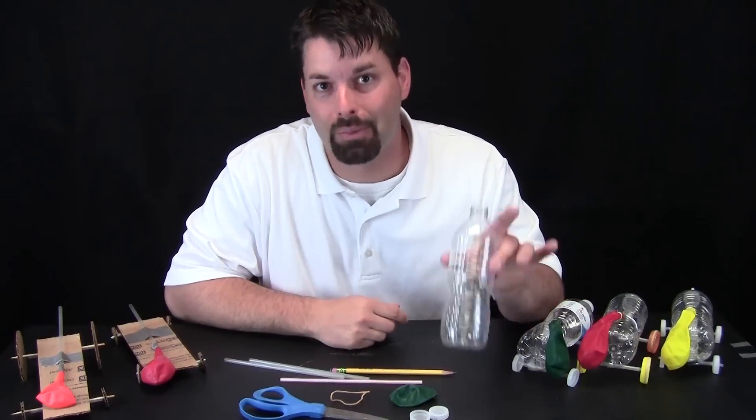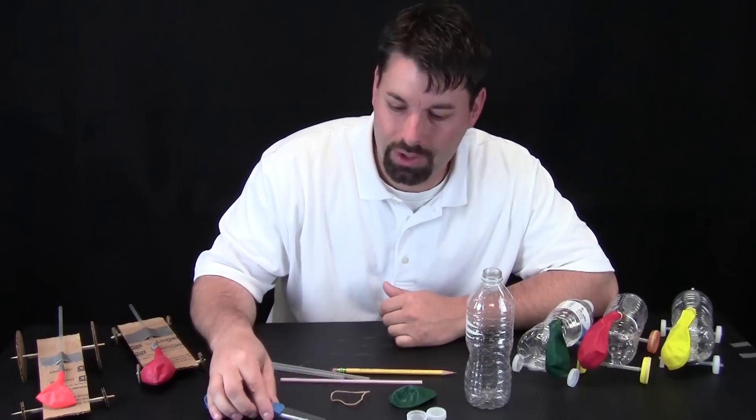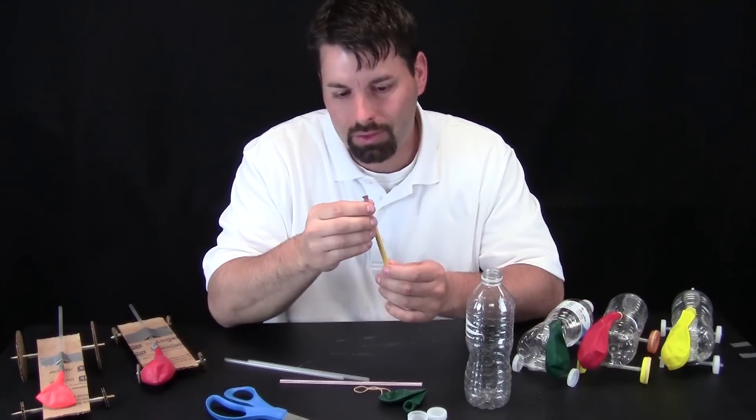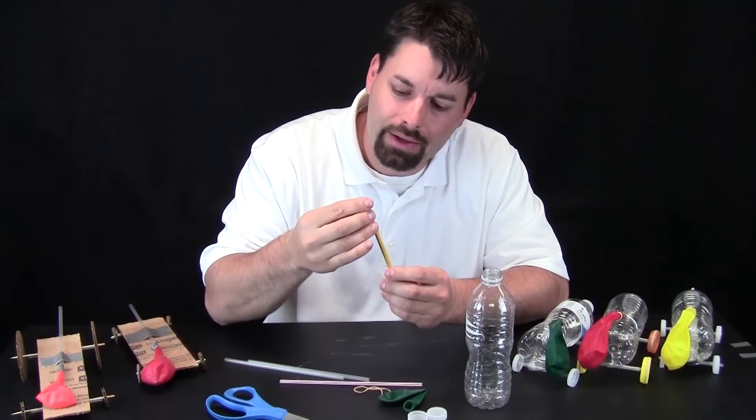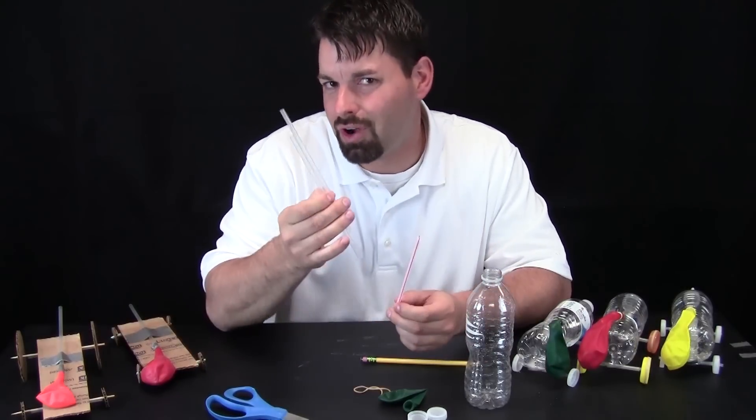What do we need? A plastic bottle, four lids, scissors, rubber band, balloon, pencil, and I have a little thumbtack stuck to the eraser of that pencil so I don't lose it, and I need three straws.